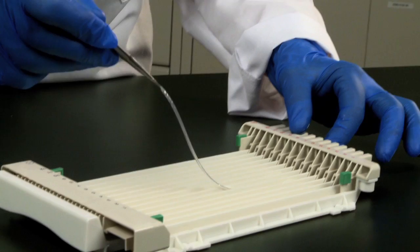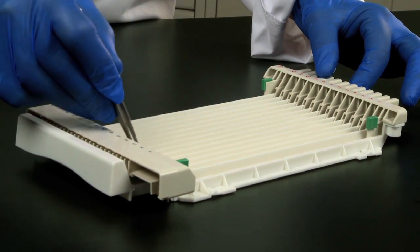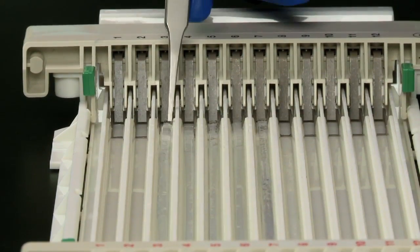Place the rehydrated IPG strip gel side down on top of the electrodes or on top of the wicks if you've chosen to use them.